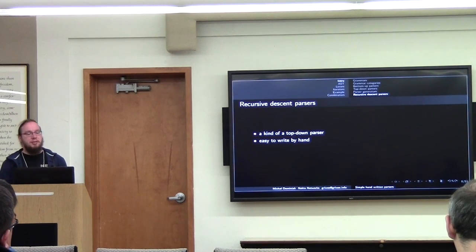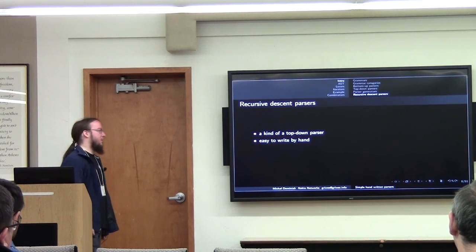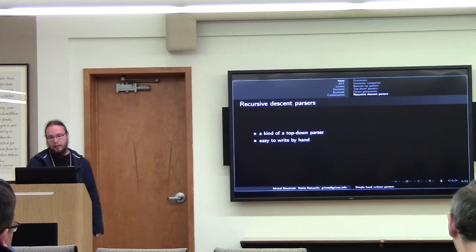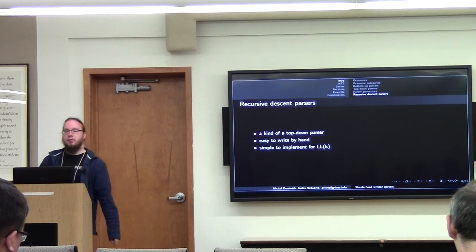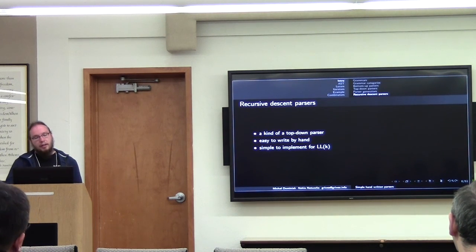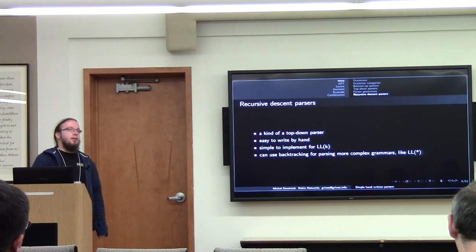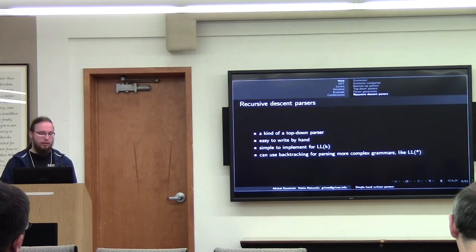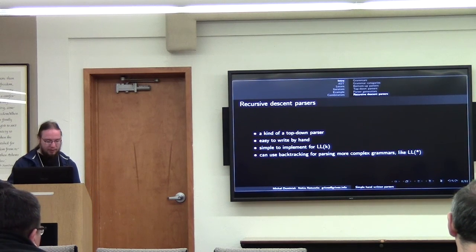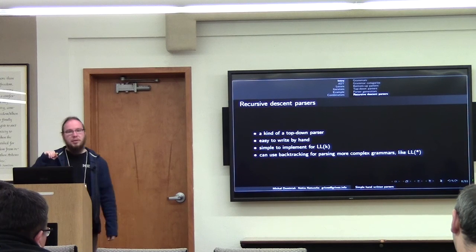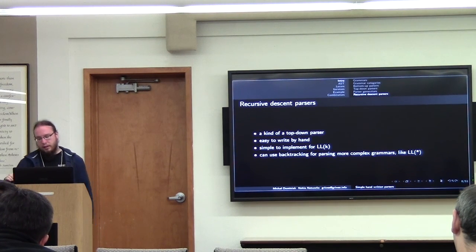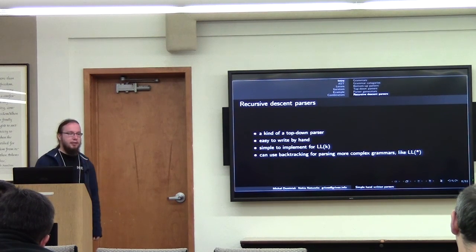Another approach is to write a recursive descent parser. It's a parser that goes from top to bottom, tries the rules, and based on that goes further and further. It's very simple to implement for LL grammars — you just look ahead and based on that follow with other production rules. And for more complex grammars, it's quite easy to implement parsers with backtracking when writing a recursive descent parser. Backtracking means we save a place where we cannot determine what's going on next, try to parse the first rule, and if that fails, try the other rule that potentially matches. It composes very nicely when you have well-defined parsing functions.